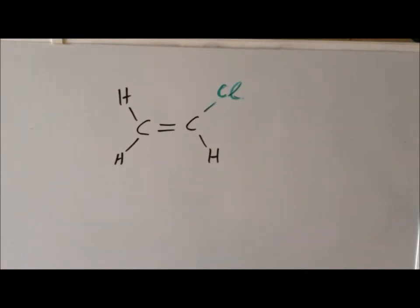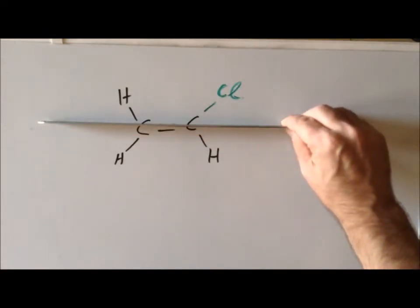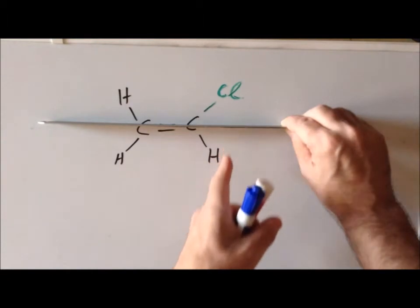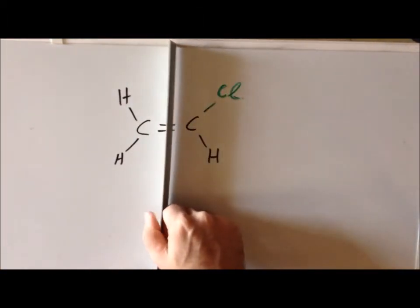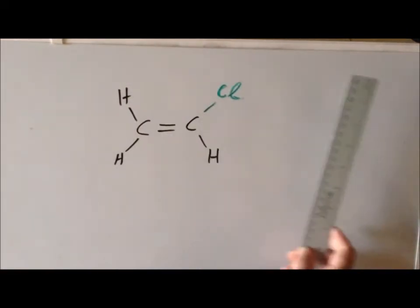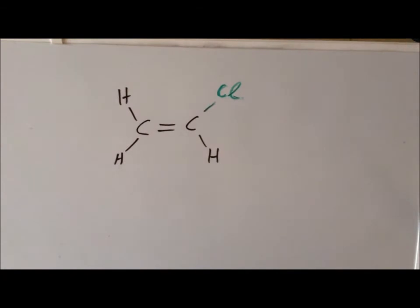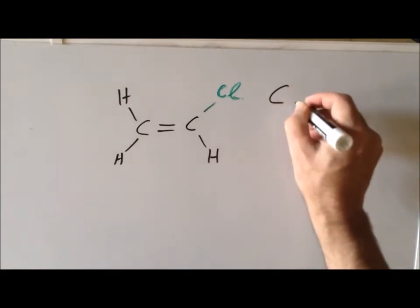Since the highest rotation axis is C1, we now look for mirrors. The XZ mirror would reflect chlorine into hydrogen — doesn't work. The YZ mirror would reflect hydrogen into chlorine — doesn't work. The only mirror plane remaining is in the plane of the board. Since we have only the identity and one mirror plane, chloroethylene has the point group symmetry Cs.